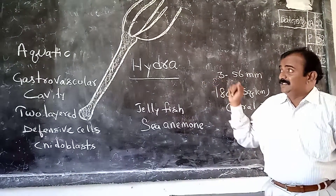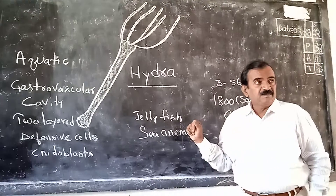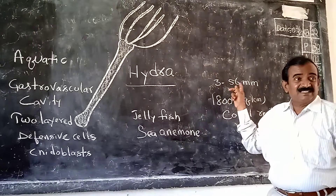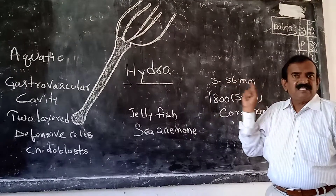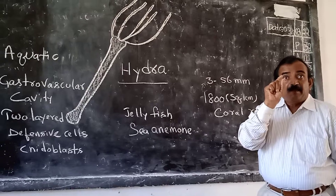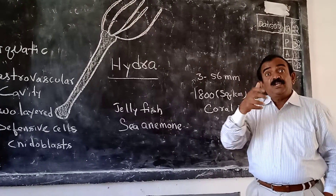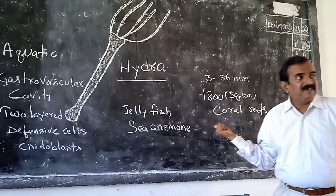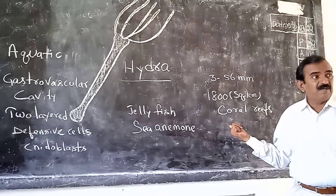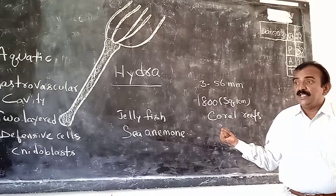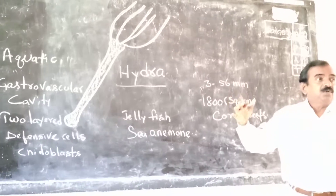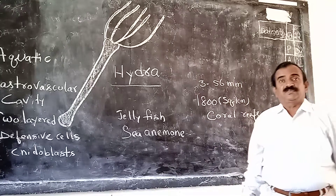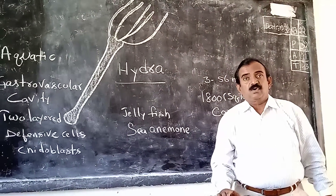These Coelenterates are about 3 to 56 millimeters in size — they are very small. But they form a huge island measuring about 1,800 square kilometers. These huge islands are called coral reefs.